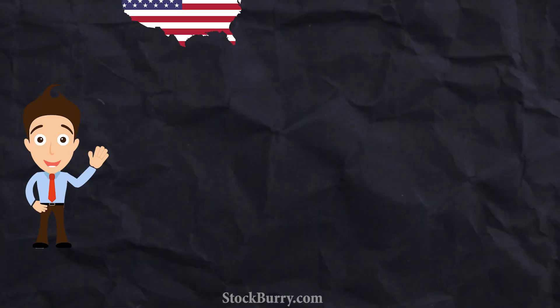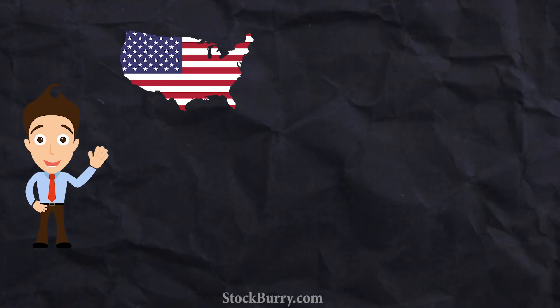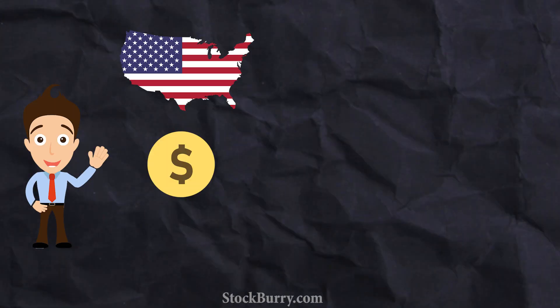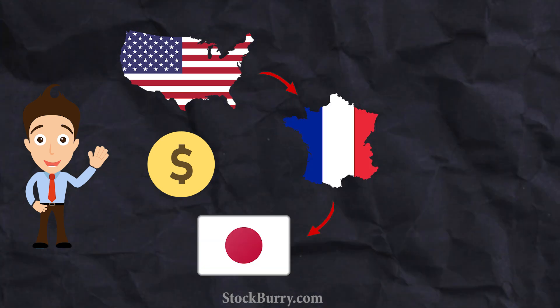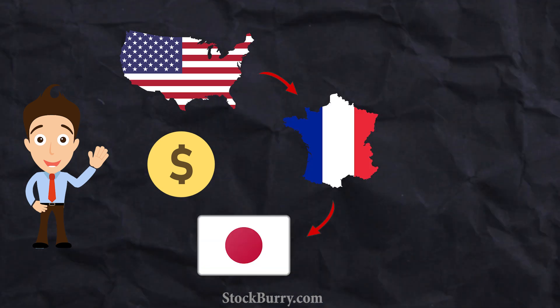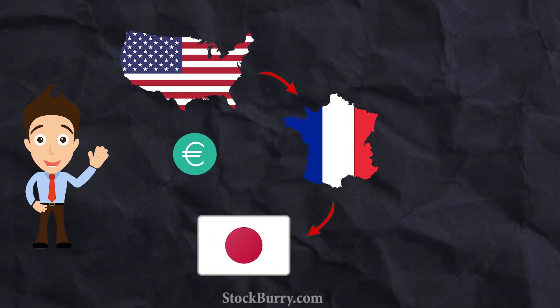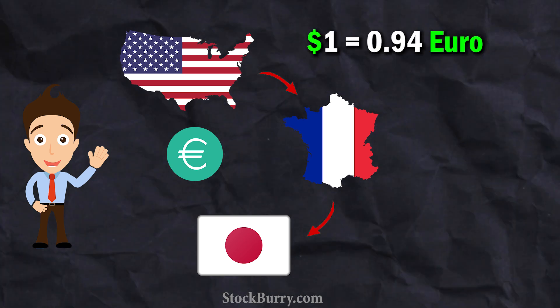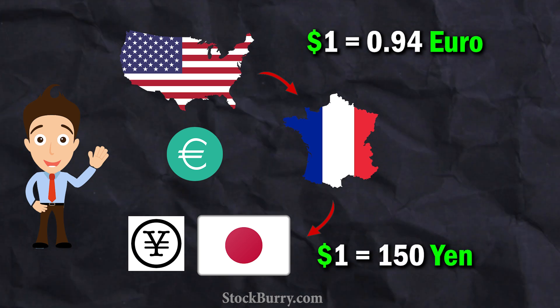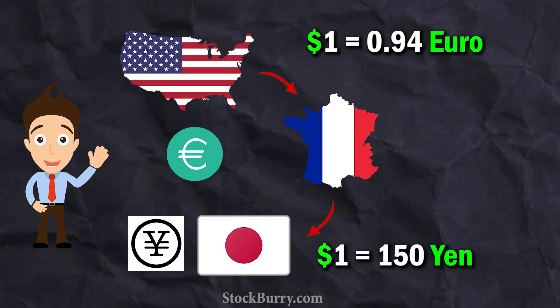This is Dan. He lives in the US, where he uses US dollars every day. Dan wants to travel to France and then to Japan. In France, they use euros, where one dollar is 0.94 euro. And when he travels to Japan, one dollar is equal to 150 yen.